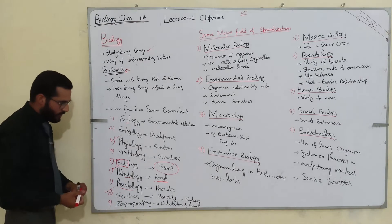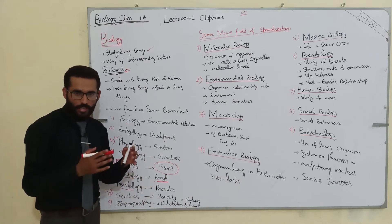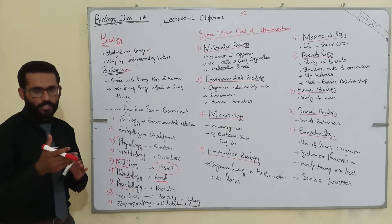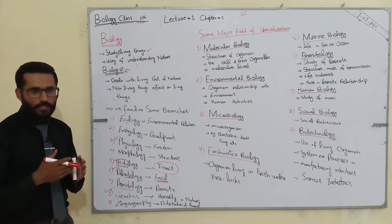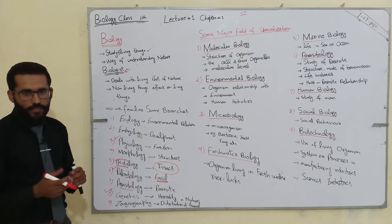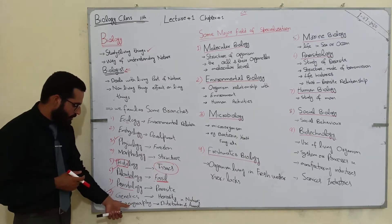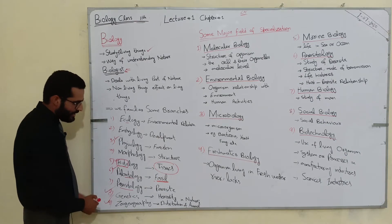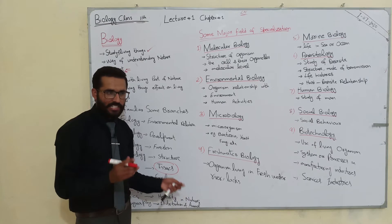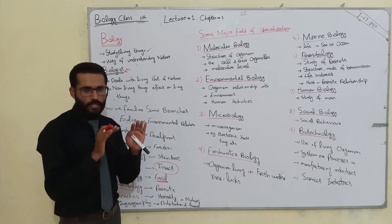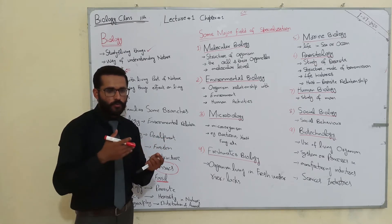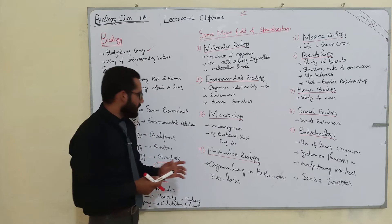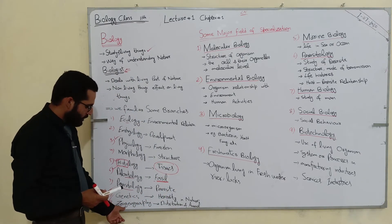Genetics is the study of genes and heredity. Zoogeography is the branch of biology which deals with the distribution of animals in nature — how animals such as humans, insects, and other animals are distributed — which is known as zoogeography.